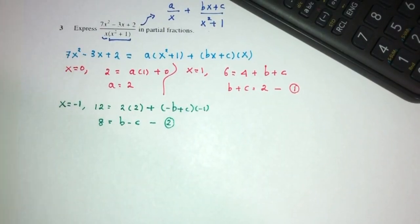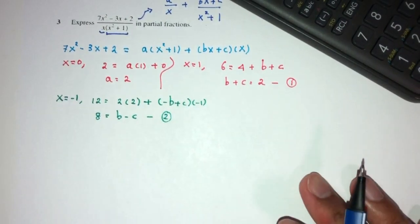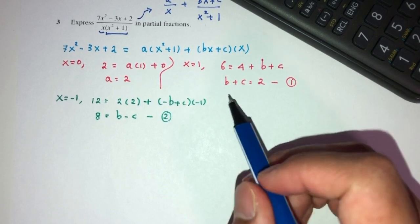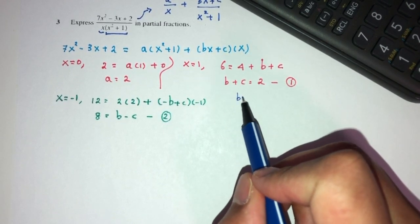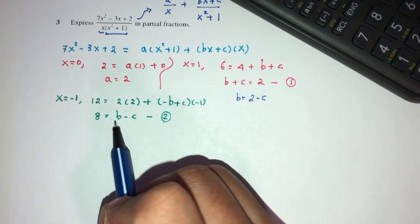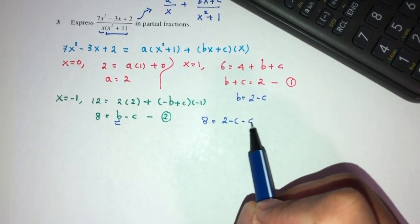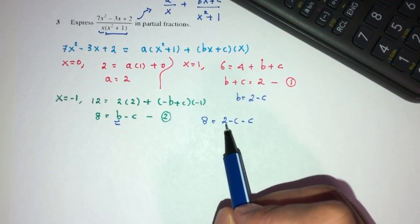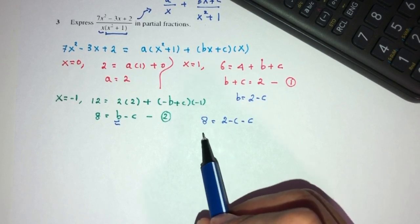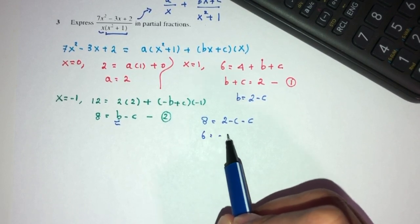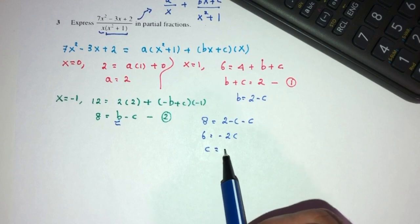Okay? So, we have two equations. We can solve them simultaneously to find the value of b and c. So, let me first make b become subject. You have 2 minus c. Replace it here. So, 8 is equal to b, which is 2 minus c, minus c. We can send this one over here. So, 8 minus this will be 6. That will be minus 2c. So, c will be the value of minus 3.